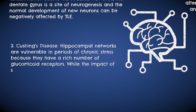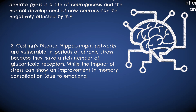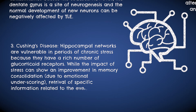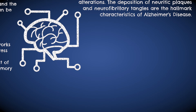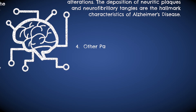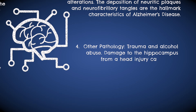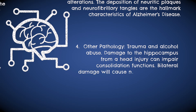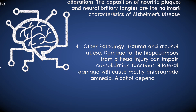Stress can improve memory consolidation via emotional underscoring; however, it can also impair specific information retrieval. Finally, trauma and alcohol dependence can damage the hippocampus. Bilateral damage will often result in anterograde amnesia, meaning a decreased ability to retain new information.